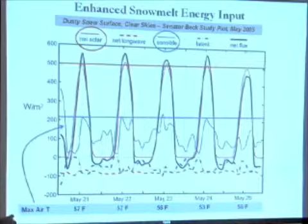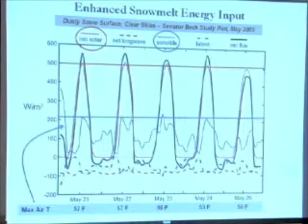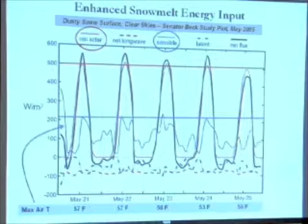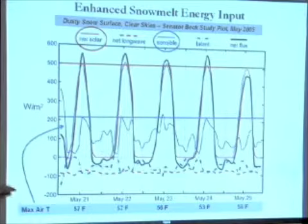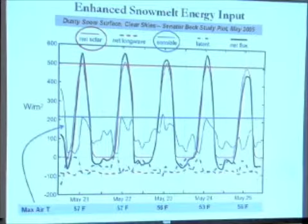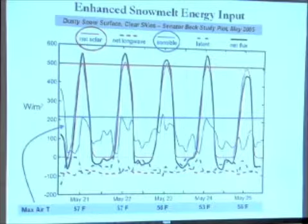Relative to the air contribution, even though the sun goes down at night and there is no net solar contribution, the amount of energy being pushed into the snowpack by this directly absorbed solar energy — directly absorbed in the dust material itself at the snow surface — is really significant. It becomes the dominant driver of snowmelt when the snowpack albedo goes down from that pristine, clean snow.